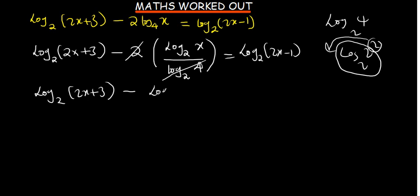That would be negative log in base 2 of x. We'll take also this term on the other side. That would be negative log in base 2 of 2x minus 1. Should be equal to 0.